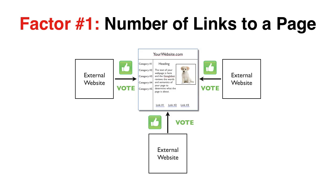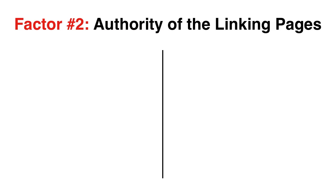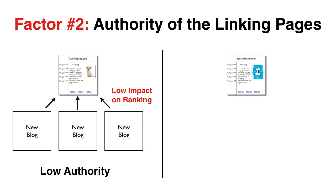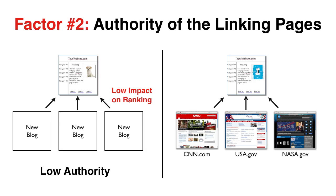A second factor that influences the rank of a particular page is the authority of the linking pages. For example, let's take a look at two pages on the internet which both have three incoming links. The first website is linked to by three relatively new bloggers who just enjoyed reading the page — these linking pages do not carry a lot of authority, so the ranking impact of these links will be minimal. The second website, on the other hand, is linked to by cnn.com, usa.gov, and nasa.gov. These high-authority sites clearly carry a lot of authority, and the fact that they link to this page transfers authority to it and has a big impact on its rank in the search engines.